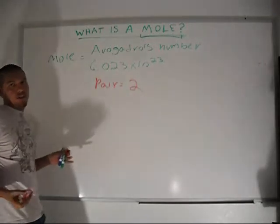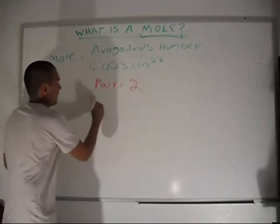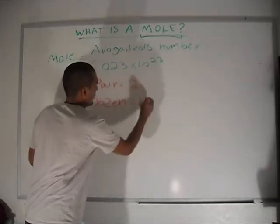What about a dozen of like eggs? A dozen of eggs. A dozen is equal to 12, right?